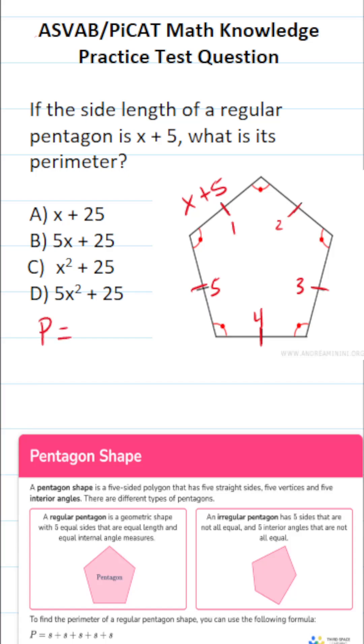And how do you find the perimeter of any polygon? You simply add up all of its sides. But in this case, we know all the sides are equal.